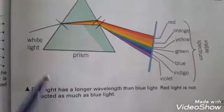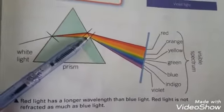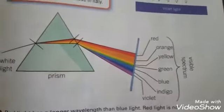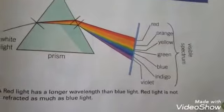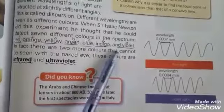Red light has a longer wavelength than blue light, because red light is not refracted as much as blue light. Different colors are produced by different wavelengths, and this process is known as dispersion. Sir Isaac Newton found seven colors: red, orange, yellow, green, blue, indigo, and violet.